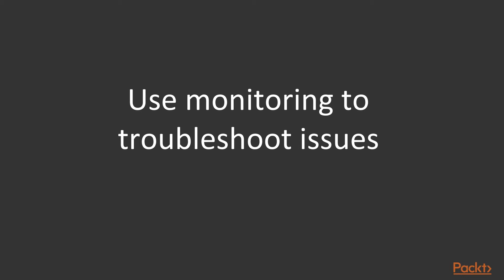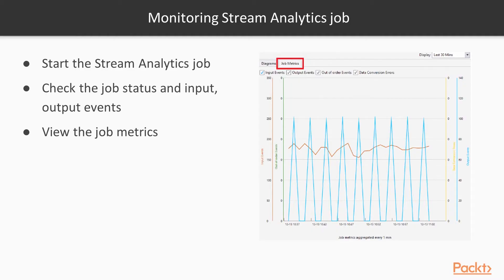The last section covers how to use monitoring to troubleshoot issues in an Azure Stream Analytics job. To start monitoring, you need to first start the Stream Analytics job, then check the job status, input and output events, and finally view the job metrics.